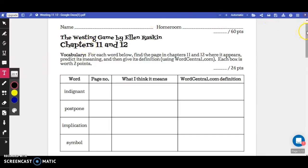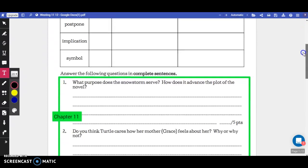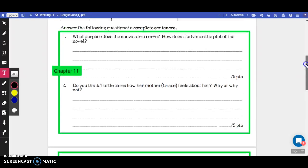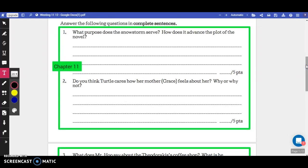For the chapters 11 and 12 questions for The Westing Game, you're going to answer questions 1 through 4 using chapter 11. I just want to go through some tips and hints to help you with the questions.